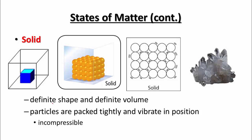Solids are particles that have a definite shape and a definite volume. The particles are packed together tightly and they vibrate in a fixed position. They're packed so tightly they're incompressible — you can't push them any closer together. Here you can see the particles are nicely arranged and packed together, and they take up their own shape. A solid takes its own definite shape and has a definite volume — it doesn't go out to the edge of the container walls.